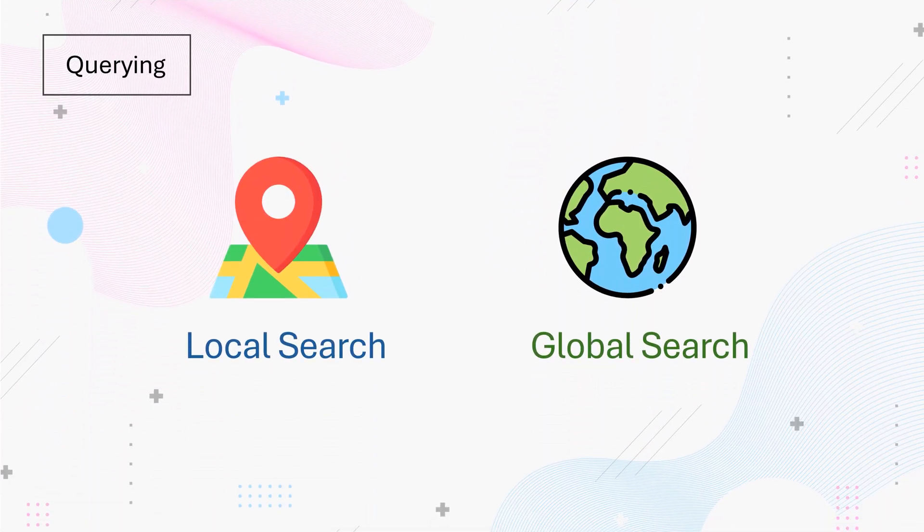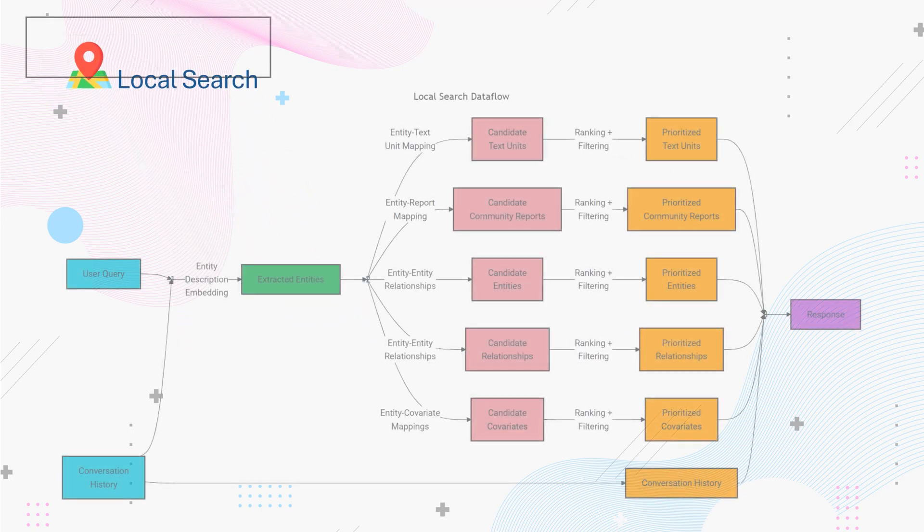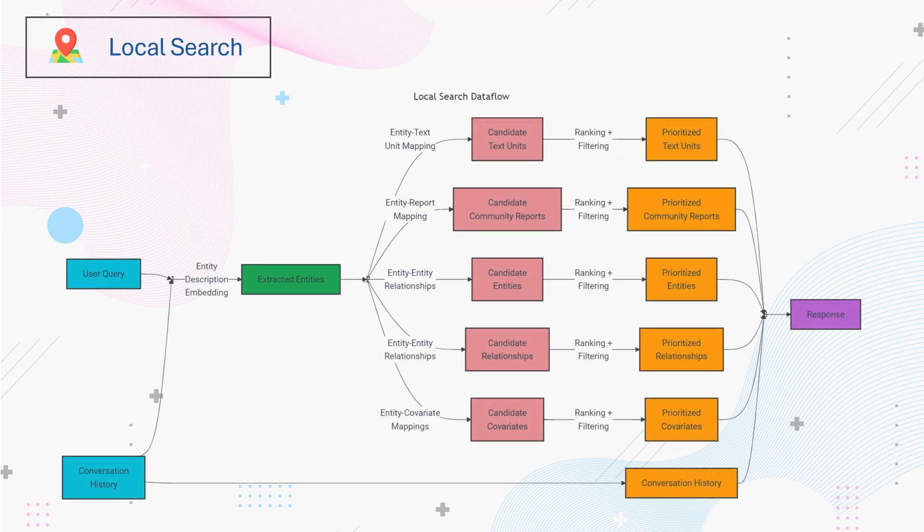Now our knowledge graph created through Graph RAG is ready to answer questions. Graph RAG provides two ways to query the network: local search and global search. Local search is used when we want to query the graph network regarding a specific fact which lies in a specific text chunk or a couple of text chunks.